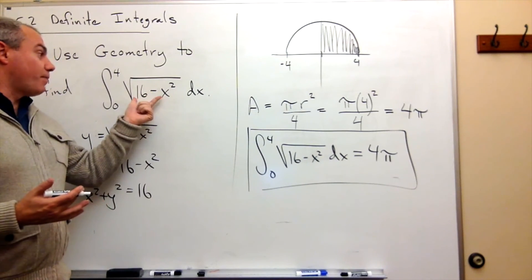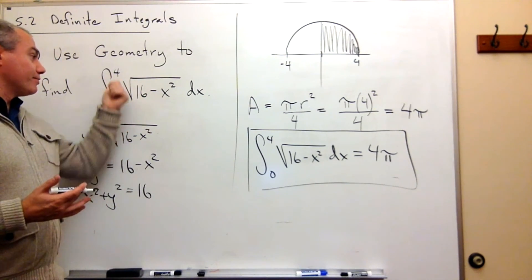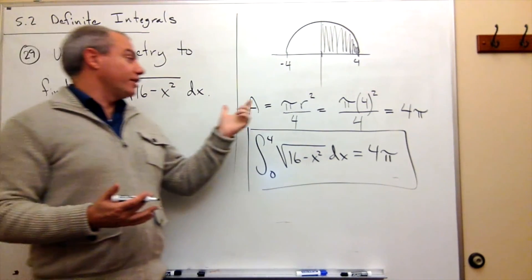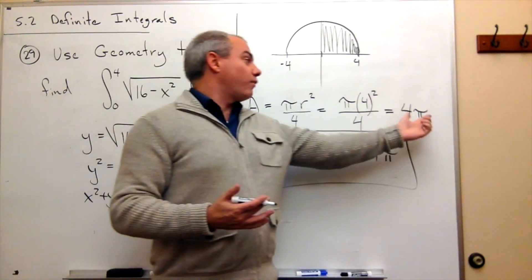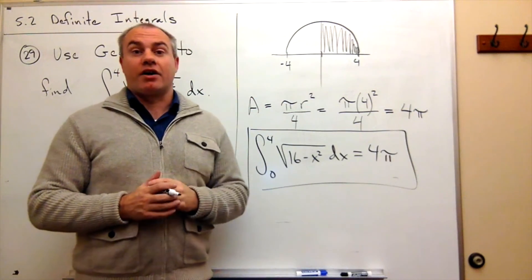So since this is always a positive function over the interval from 0 to 4, I can just calculate the area. The area is 4 pi, and we've got our definite integral.